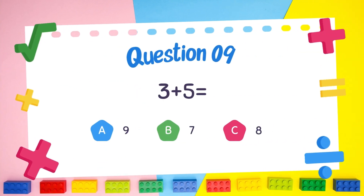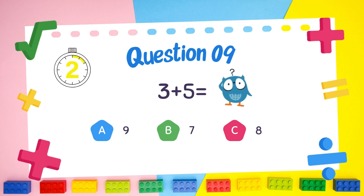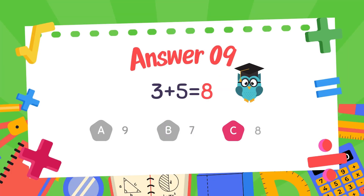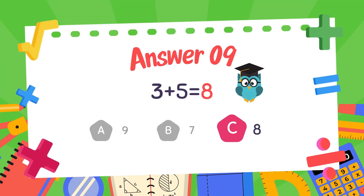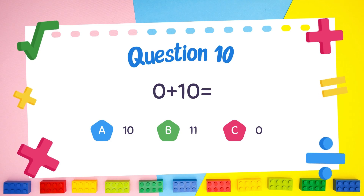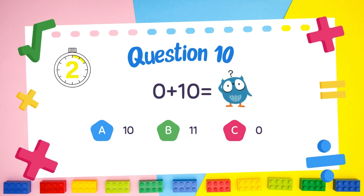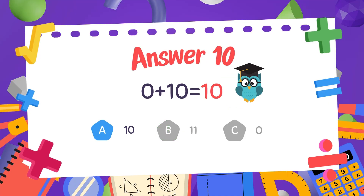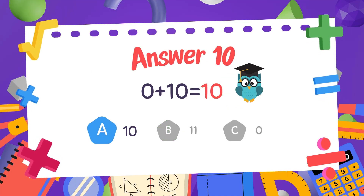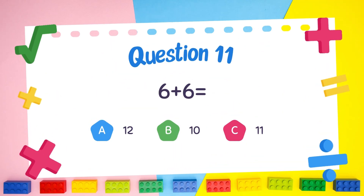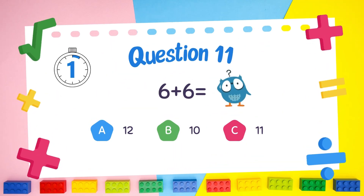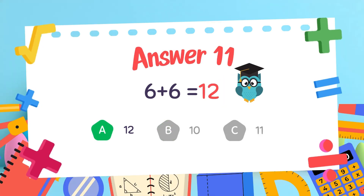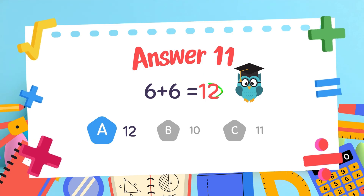What is 3 plus 5? The answer is 8. What is 6 plus 6? The answer is 12.